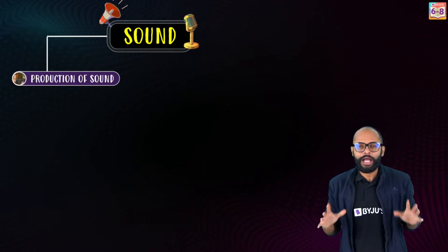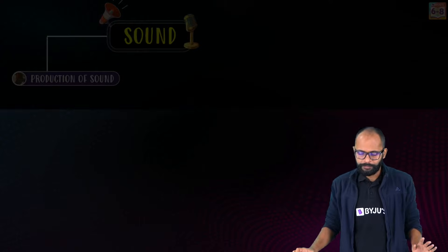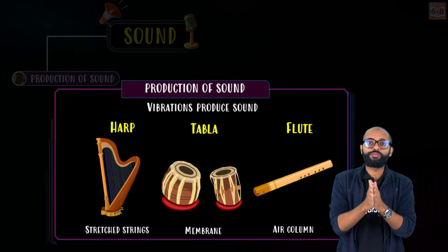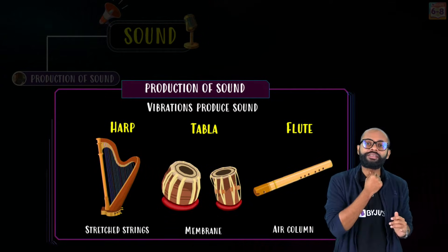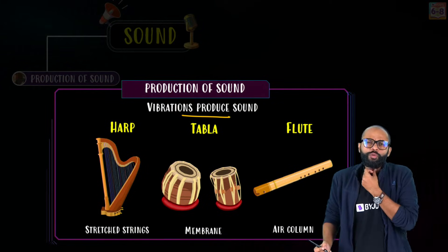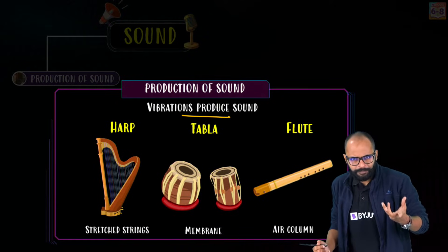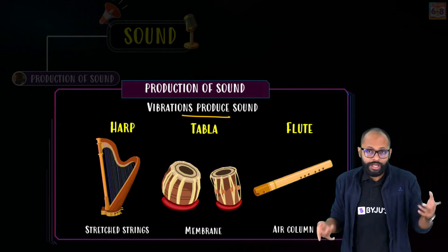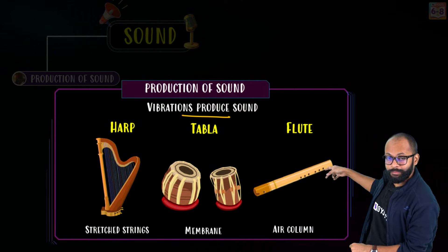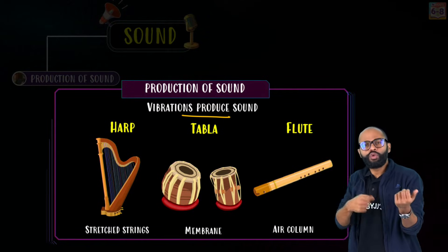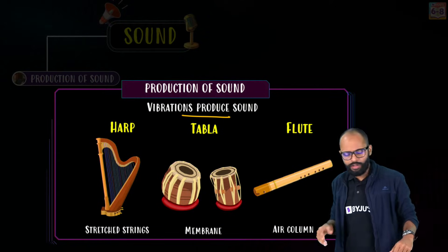Sound starts with the production of sound — you have to produce the sound first. How? Vibrations. Vibrations produce the sound. In humans it's not very visible, but in instruments you can see vibrations clearly. For example, a harp or guitar — string-based instruments. You vibrate them and you hear sound. Then there are membrane-based instruments and flute, where an air column is vibrating.